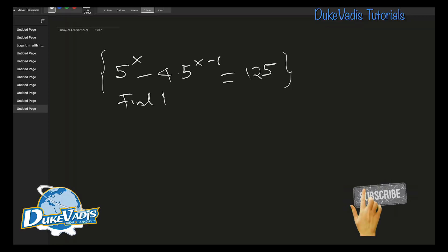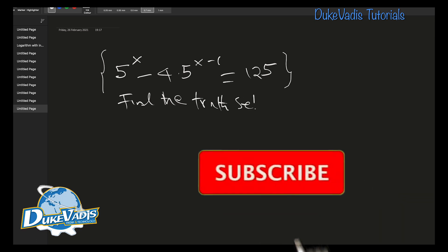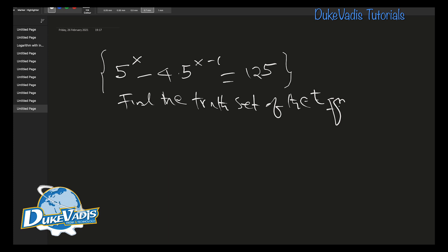What does the question say? Find the truth set of the equation. We have to break it down step by step so that everybody can understand. We have 5 raised to the power of x minus 4 times 5 raised to the power of x. This can be written as 5 dot 5 to the negative 1, equal to 5 raised to the power of 3.